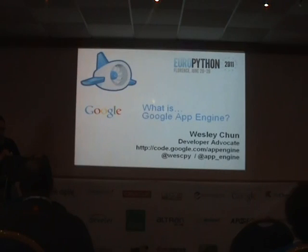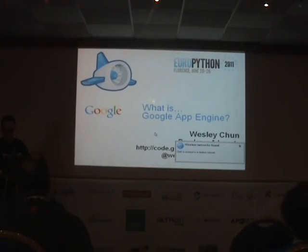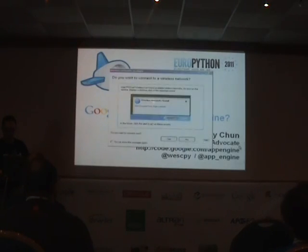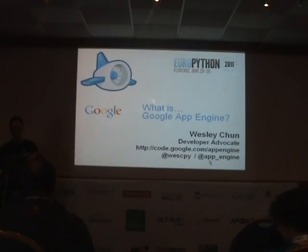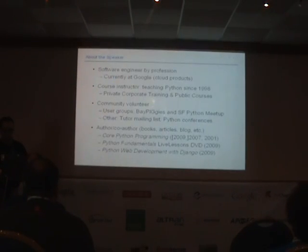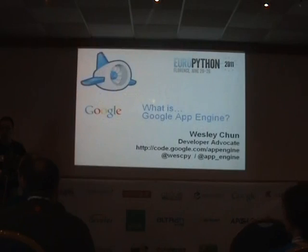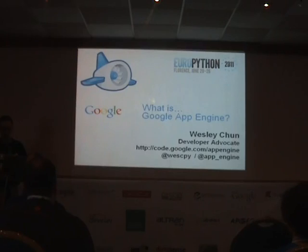I'm Wesley Chun. I'm a developer advocate at Google. You can get the web page for App Engine — it's the one right below. You can contact me on my Twitter, or you can also follow the App Engine team Twitter. It's code.google.com/appengine.